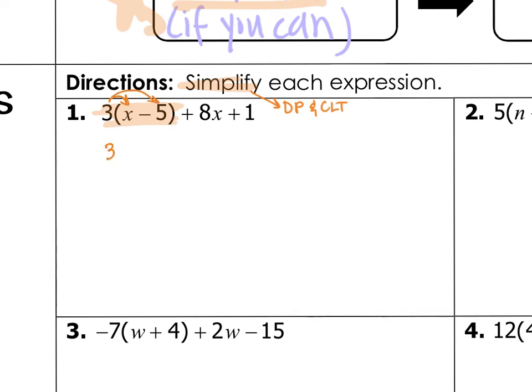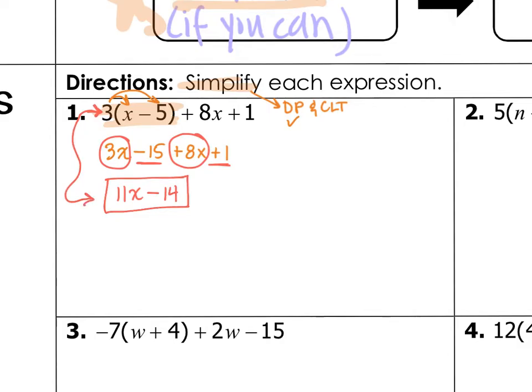Let me take care of that distribution. Multiply 3 to x and 3 to minus 5 to make minus 15. And then write down the rest of the problem plus 8x plus 1. So, now we've taken care of the distributive property. Next, we check for like terms. I've got like variable terms of 3x plus 8x to make 11x. And I've got like constant terms of minus 15 plus 1 to make minus 14. And that's as simple as that's going to get.